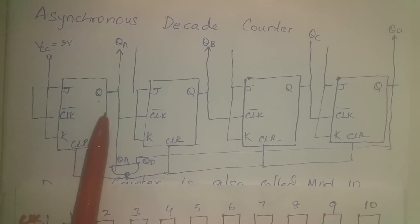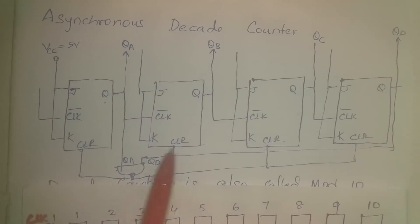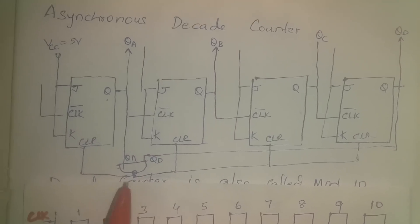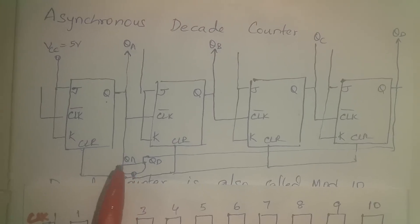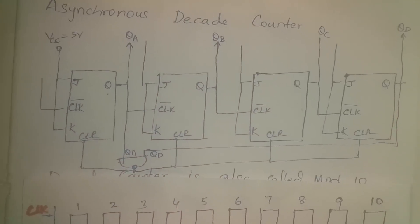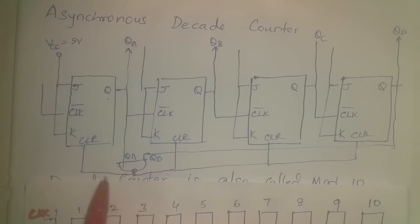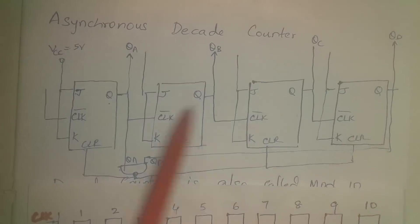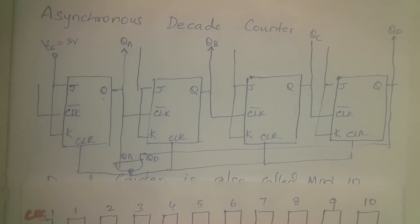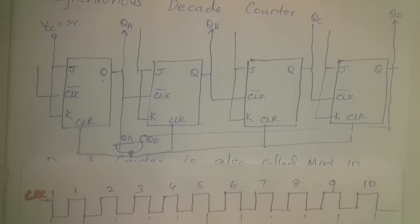After counting 9, QA and QD are both high. These two outputs are connected as inputs to a NAND gate. The NAND gate output goes low when both inputs are high, so when QA and QD go high — only in the ninth state — the output goes low and is applied as a clear signal to all flip-flops, resetting the counter. This is called a mod-10 counter, a four-bit counter.